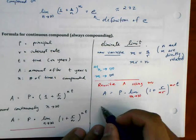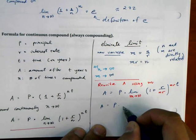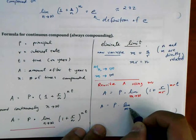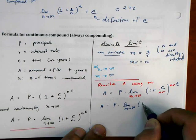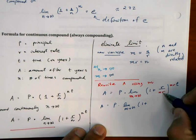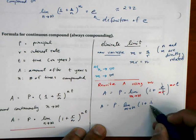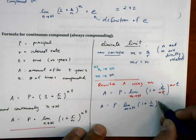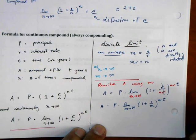This is A equals P times the limit as M approaches infinity of 1 plus R over MR is just 1 over M raised to the MRT.